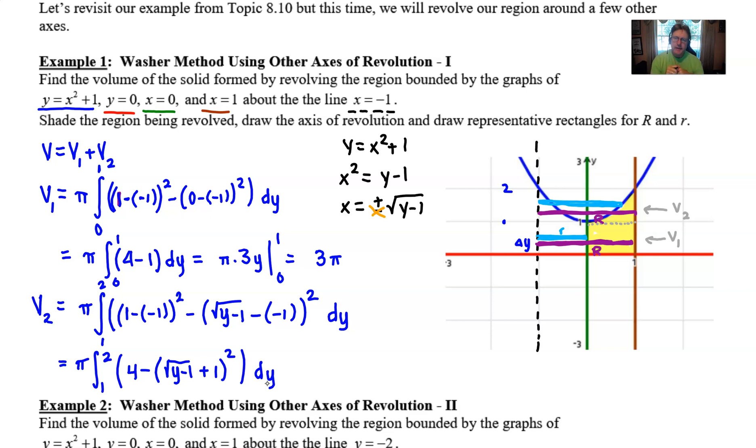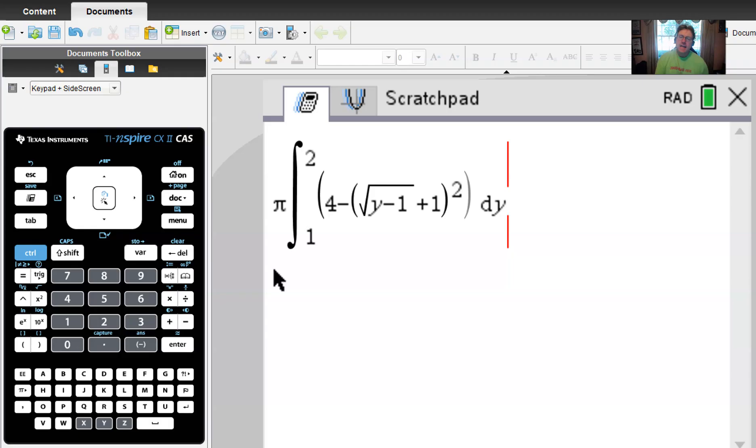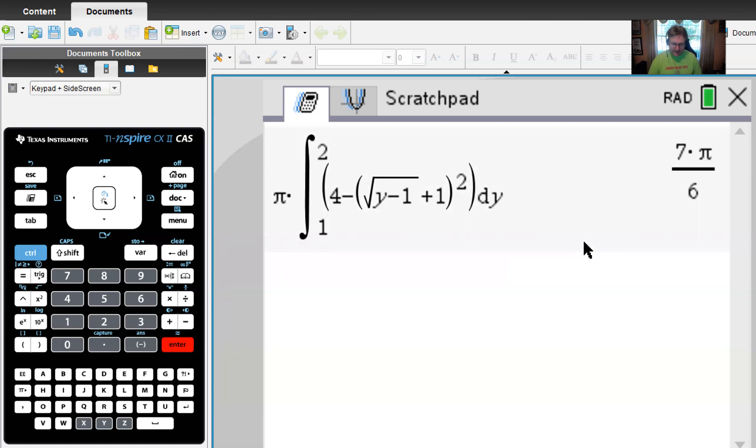So here we go, we're at the TI Inspire scratchpad calculator screen, and I believe that I've entered that particular integral in correctly. And we're going to hit enter, and we see the result is, drumroll please, 7 pi over 6. So that's the volume of that region that we kind of denoted V2 that is going to be revolved. Now we'll go back to the other document, add those two together, and we'll have our final answer.